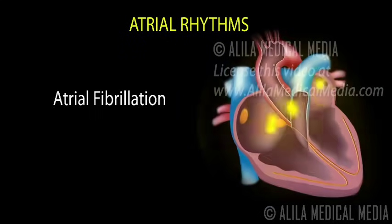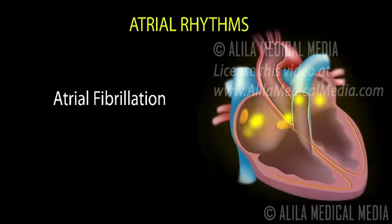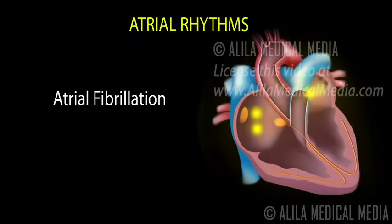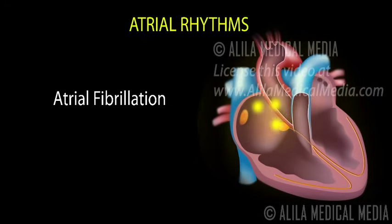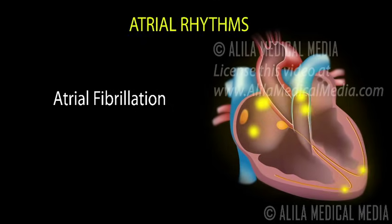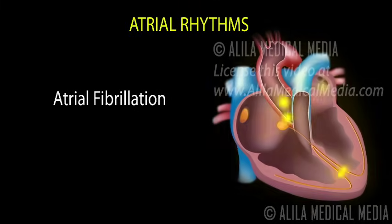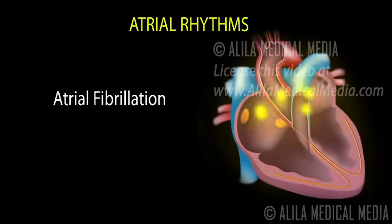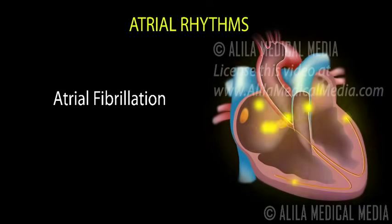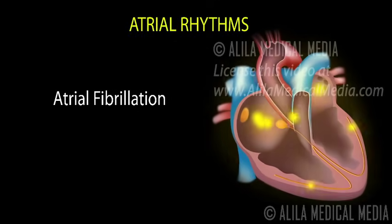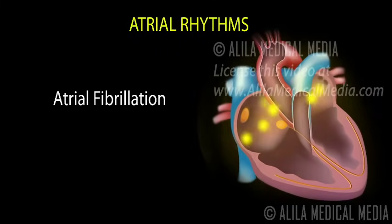Atrial fibrillation is caused by multiple electrical impulses that are initiated randomly from many ectopic sites in and around the atria, commonly near the roots of pulmonary veins. These unsynchronized, chaotic electrical signals cause the atria to quiver or fibrillate rather than contract. The atrial rate during atrial fibrillation can be extremely high, but most of the electrical impulses do not pass through the AV node to the ventricles, again thanks to the refractory properties of the cells of the AV node. Those that do come through are irregular.